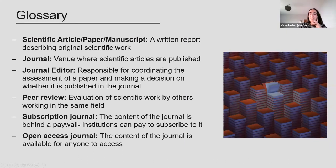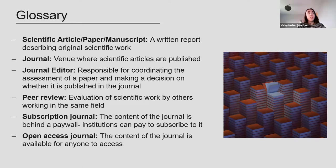To start you off with some quick terms I'm going to be using throughout the talk for those of you less familiar with scientific publishing, and then I will go into detail on some of these a bit later. The first term: a scientific article, paper, or manuscript — put simply — is a written report describing original scientific work.